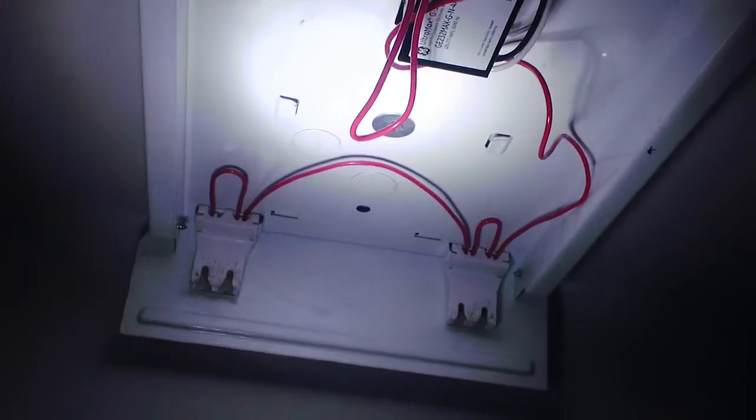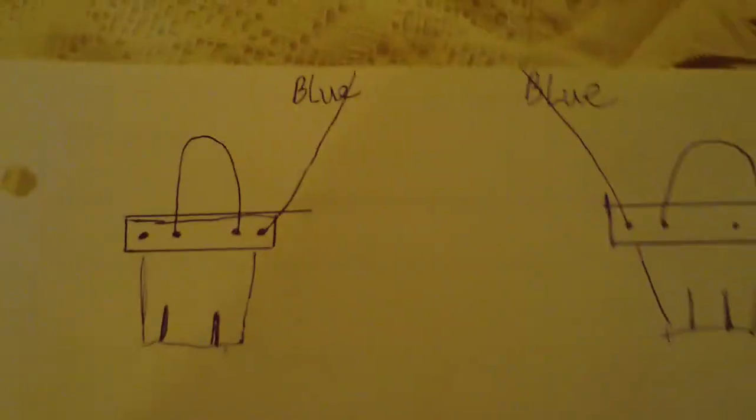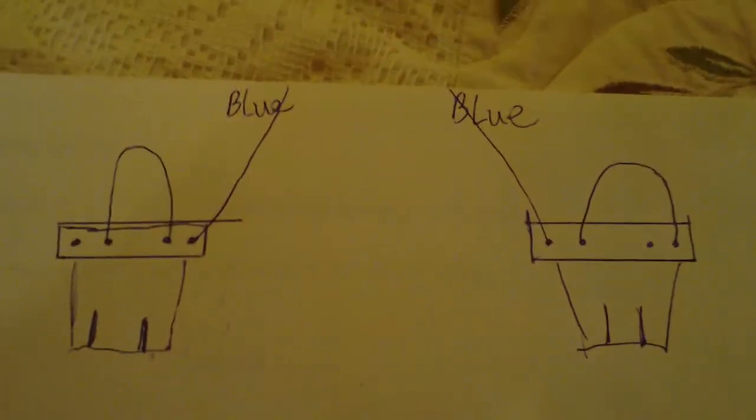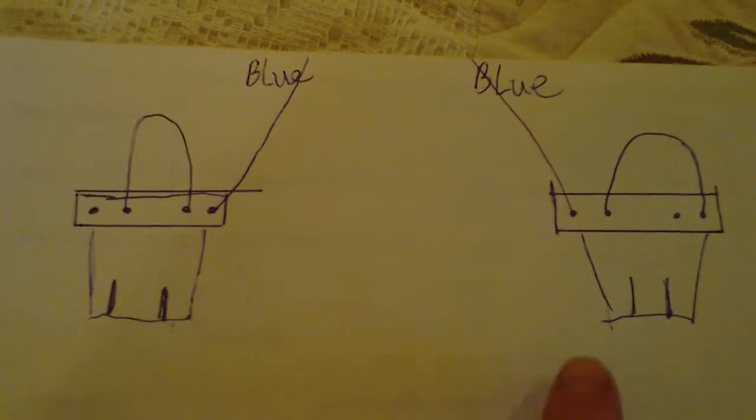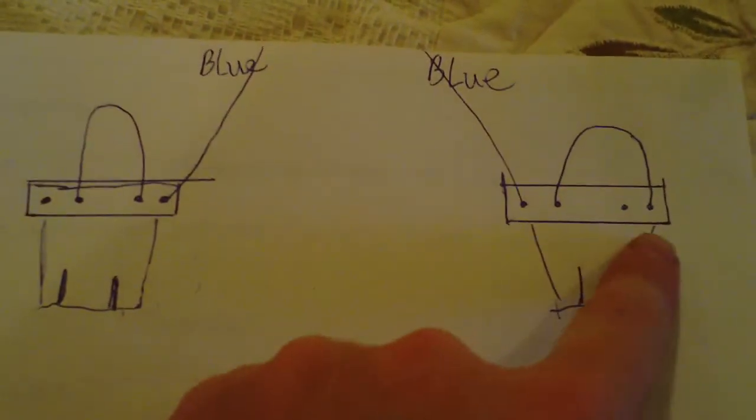And then the hardest thing really is getting the wires out of those tombstones. You just got to twist the wire. Grab it firm and twist the wire and the tombstone. Otherwise, don't just yank and start pulling. You got to twist and they'll come out easy. So there's your blue wires feeding from the ballast coming in and just make a jumper wire over to the other side.